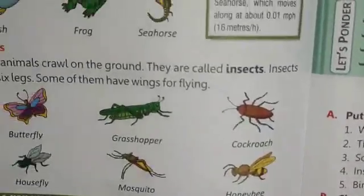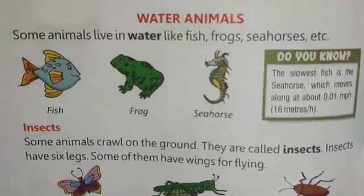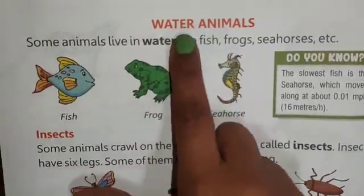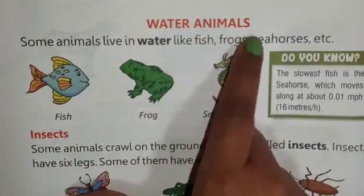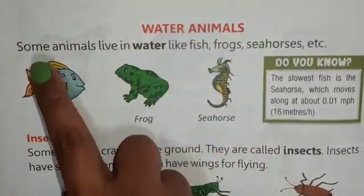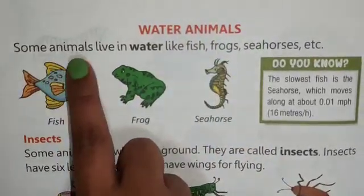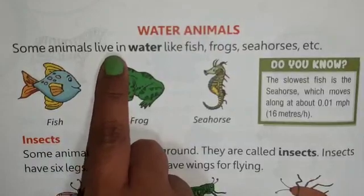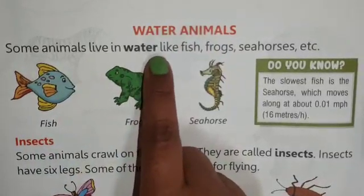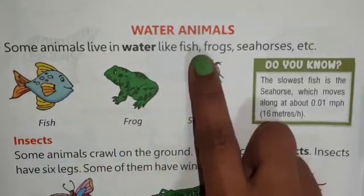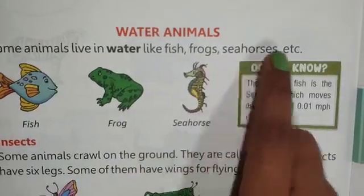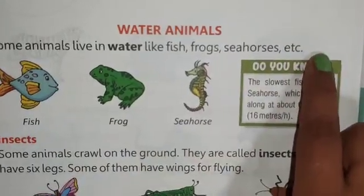Now, page number 70, Water Animals. Some animals live in water, like fish, frogs, and seahorses.